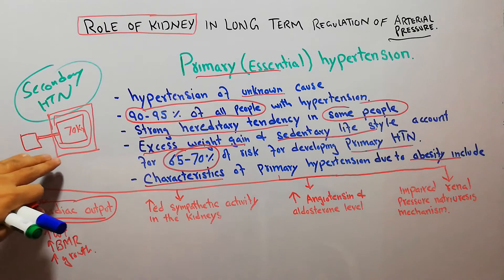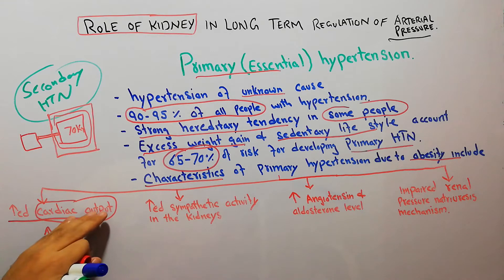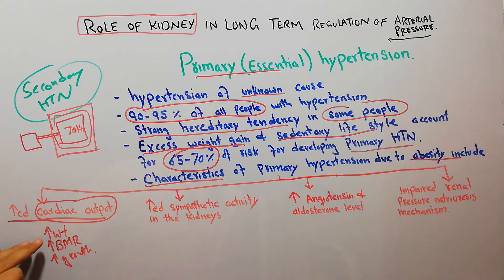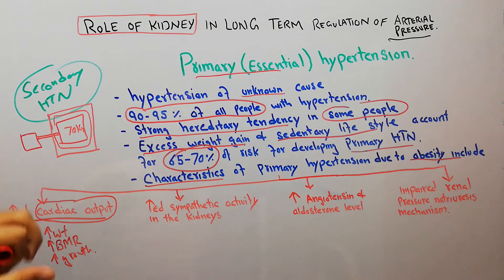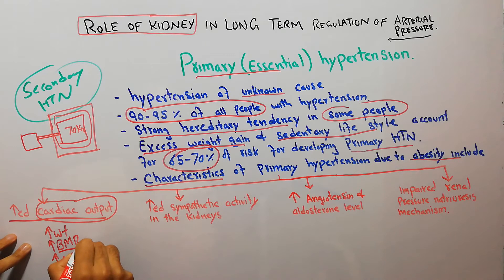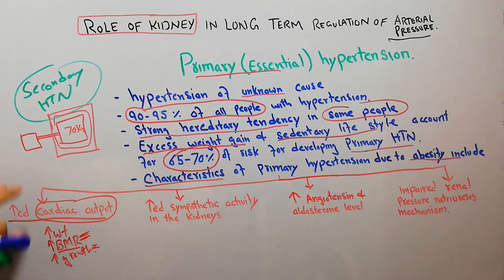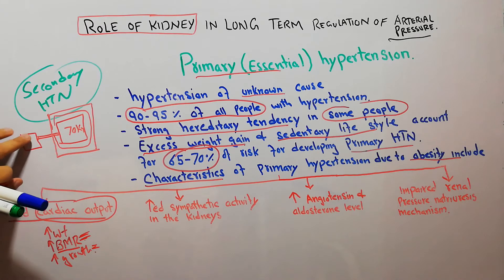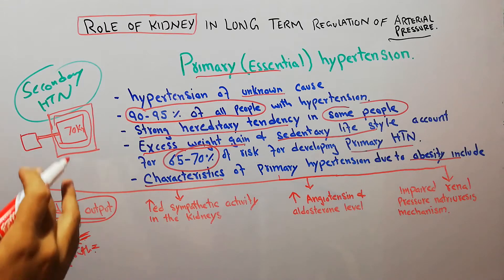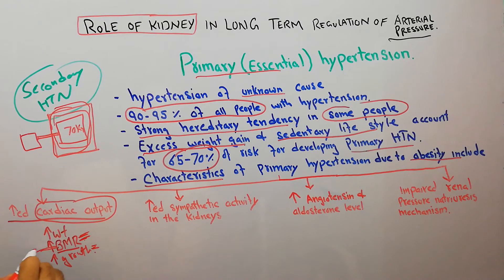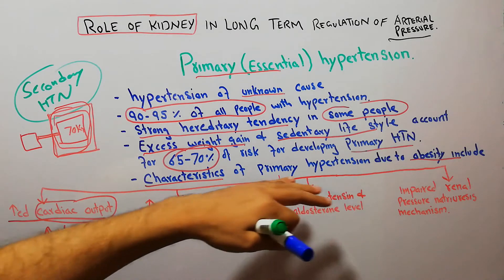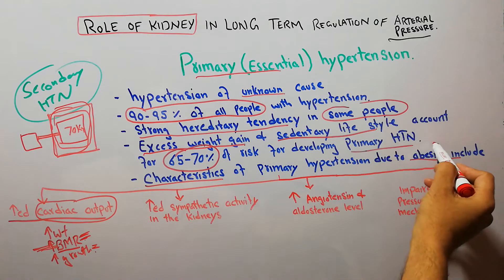Increased weight of adipose tissue is one factor leading to increased cardiac output, but there is also an increase in basal metabolic rate. All the organs in the body — the kidneys, lungs, and others — start growing, so their basal metabolic rate also increases. This again leads to increased cardiac output, as the heart must pump more blood to fulfill the needs of these growing organs with increasing demand for nutrients.